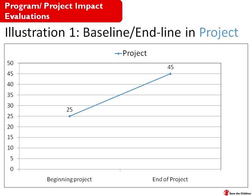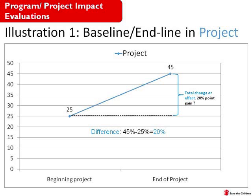The graph in front of you shows the change in an indicator over time. It shows the beginning of a project in which we conducted a baseline, and the indicator is immunization coverage. At the beginning of the project, our baseline was 25% coverage, and at the end of the project three years later, we had 45% coverage. So the total change is 45 minus 25, giving us a 20 percentage point increase in immunization over the period of time the project was implemented.